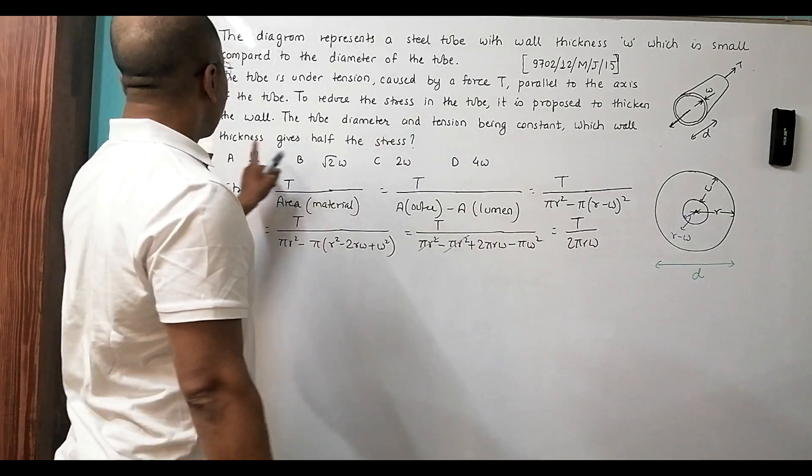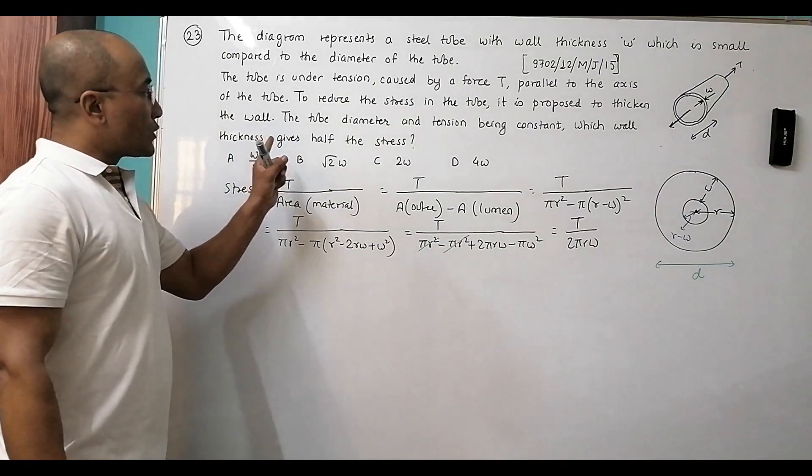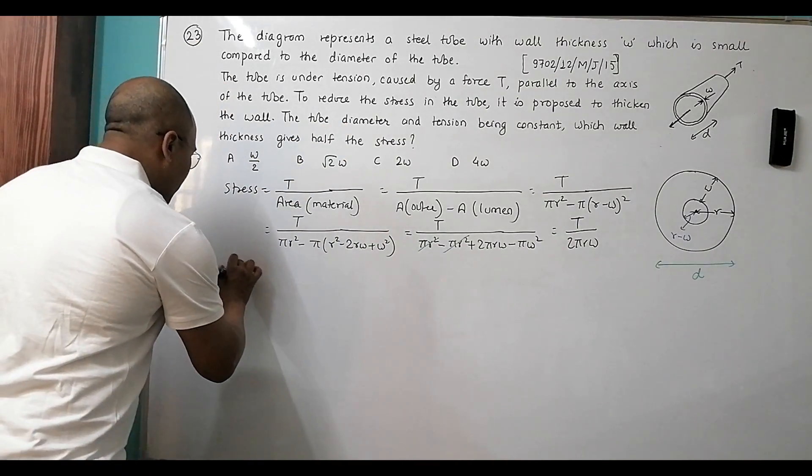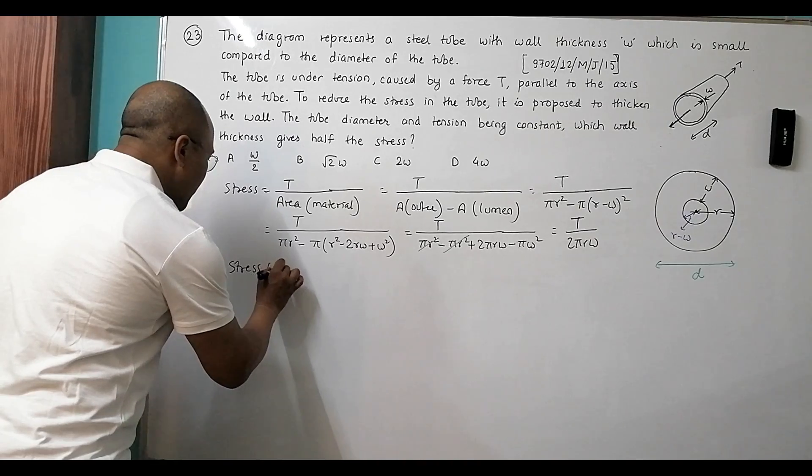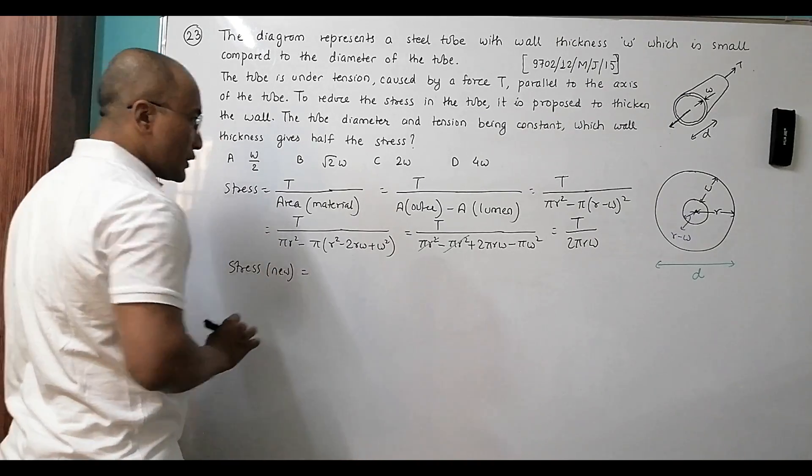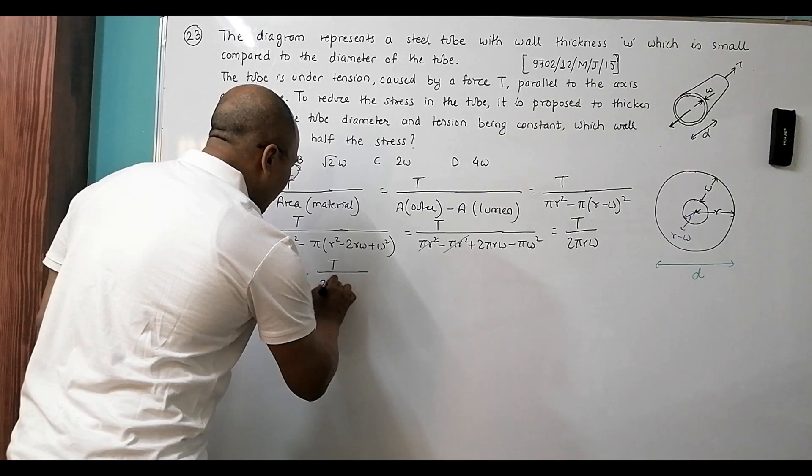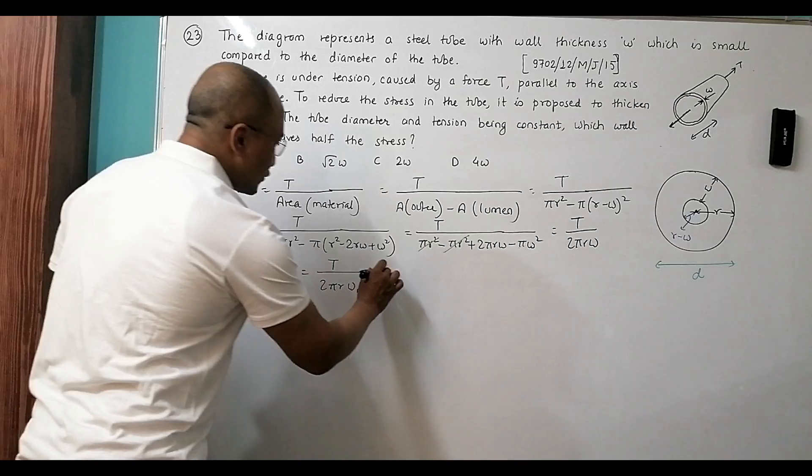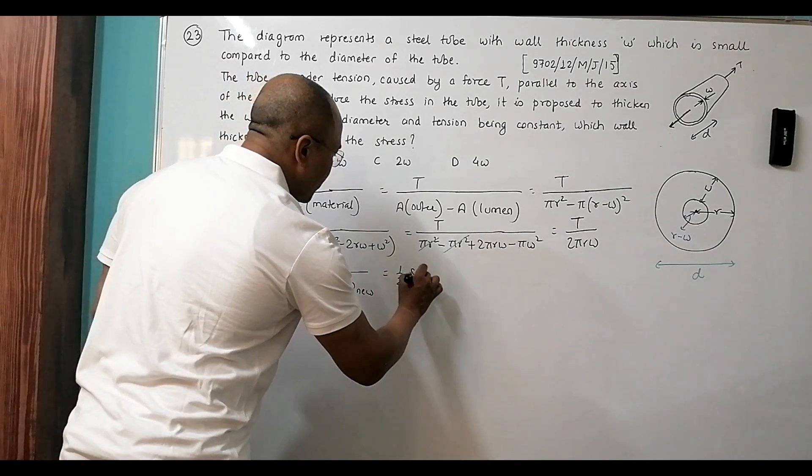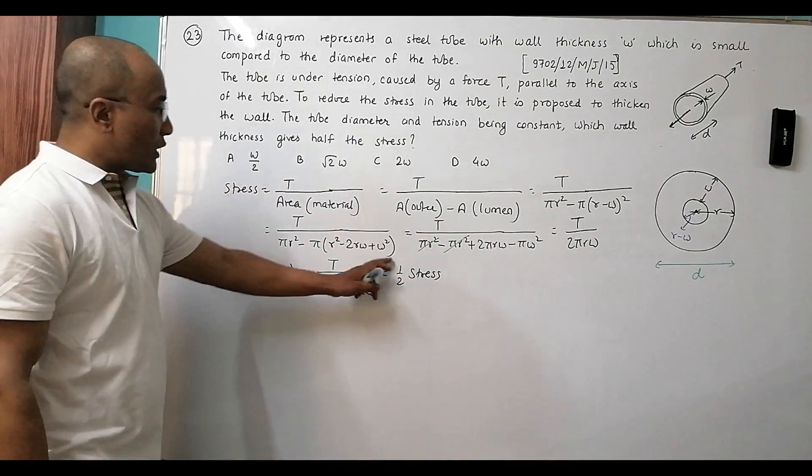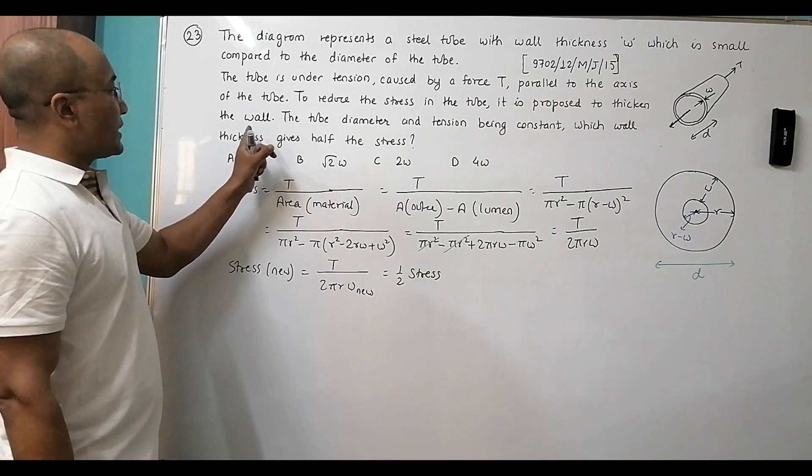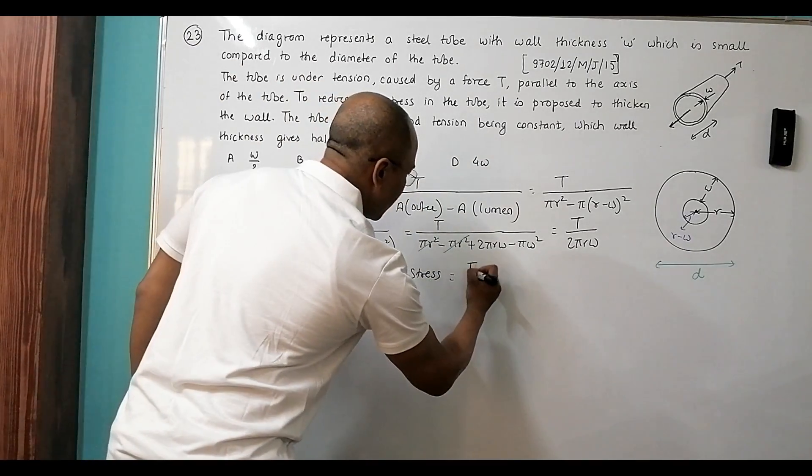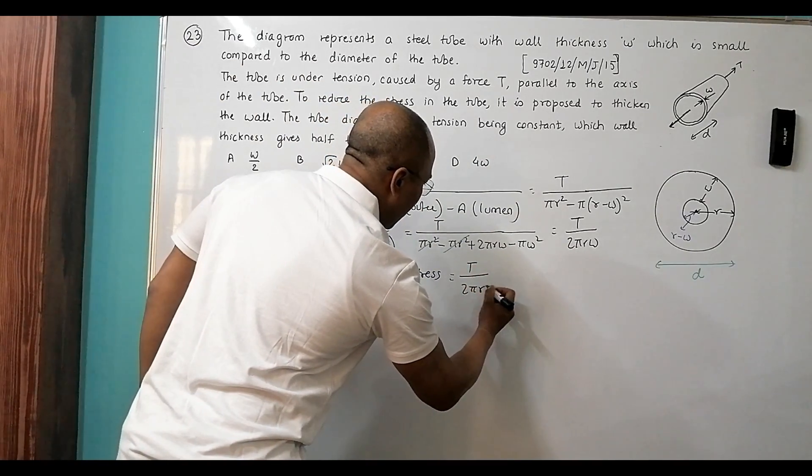Now we have to change the thickness to reduce the stress to half. So stress new is equal to T divided by 2πr times w new. This stress new is equal to one-half of previous stress. So I'll put this value here: T by 2πrw new equals one-half times T by 2πrw.